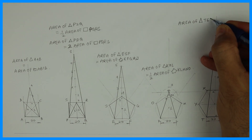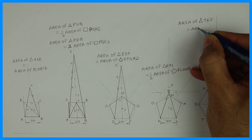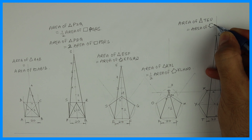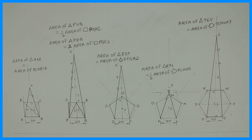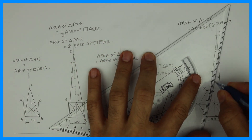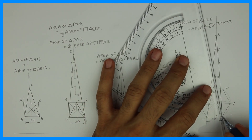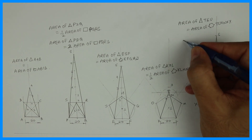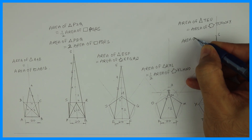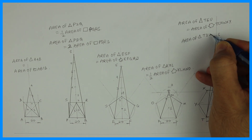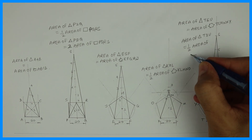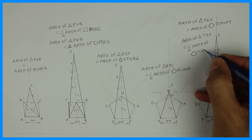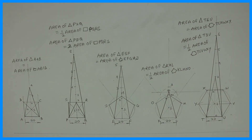Area of triangle T6U is equal to area of hexagon TUVWXY — this is the full area. If you want half the area, then you take the height only till 3. So area of triangle T3U is equal to half the area of hexagon TUVWXY. And area of triangle TUV is equal to half of the area of hexagon TUVWXY. Thank you.